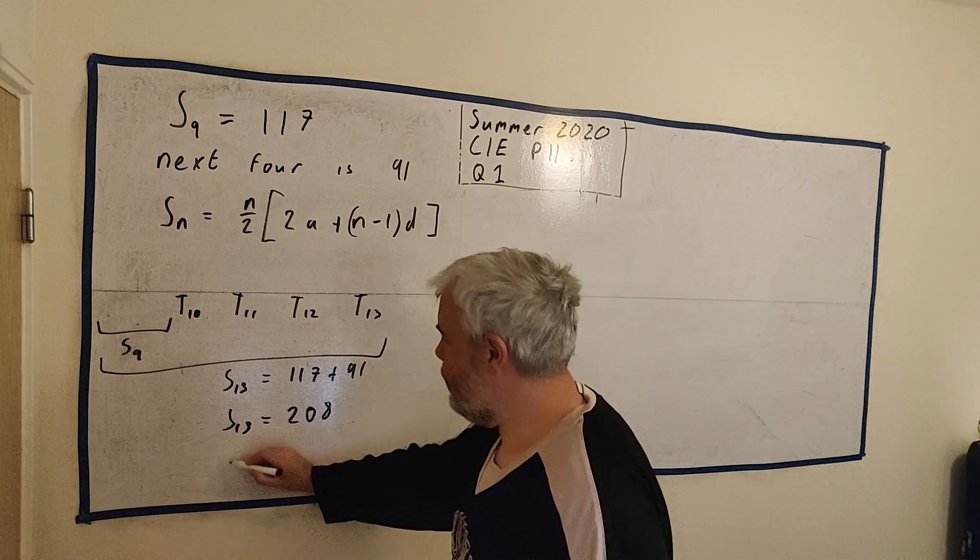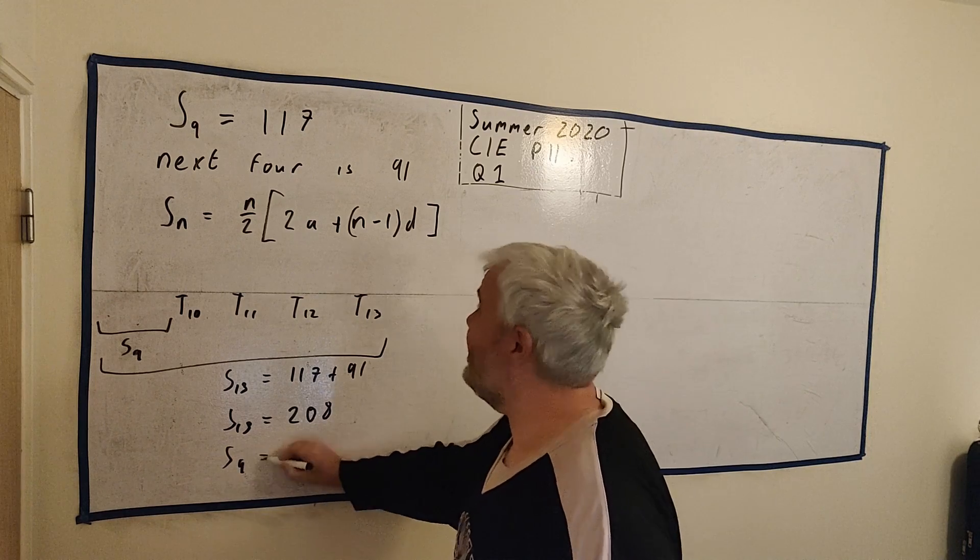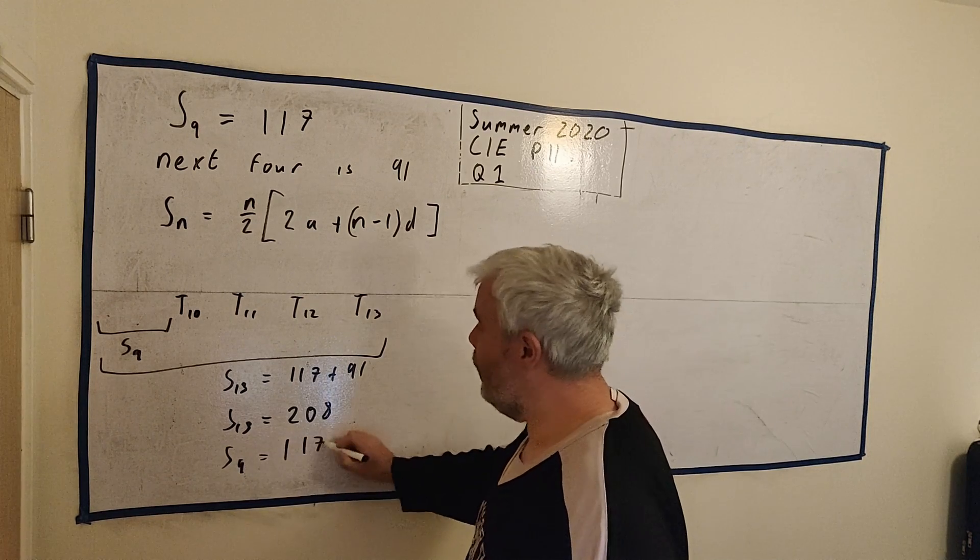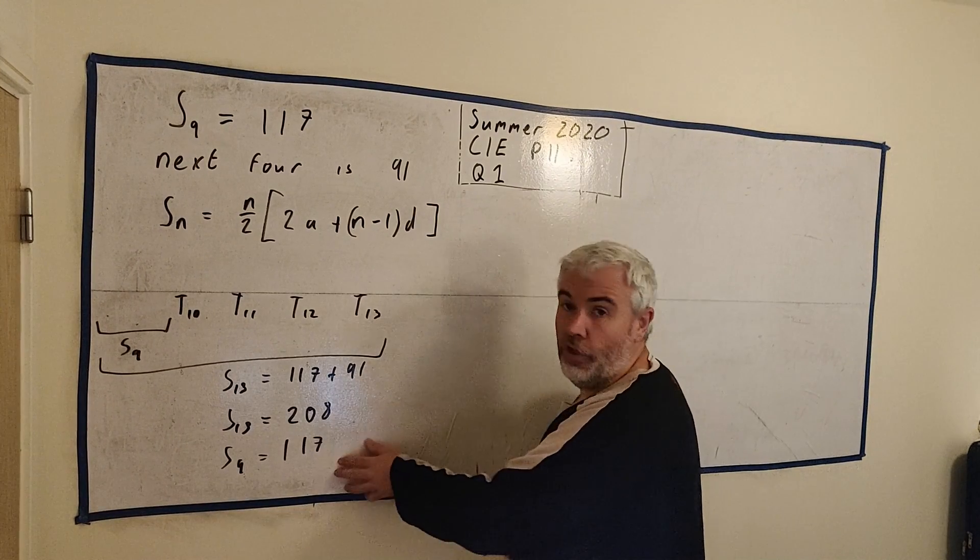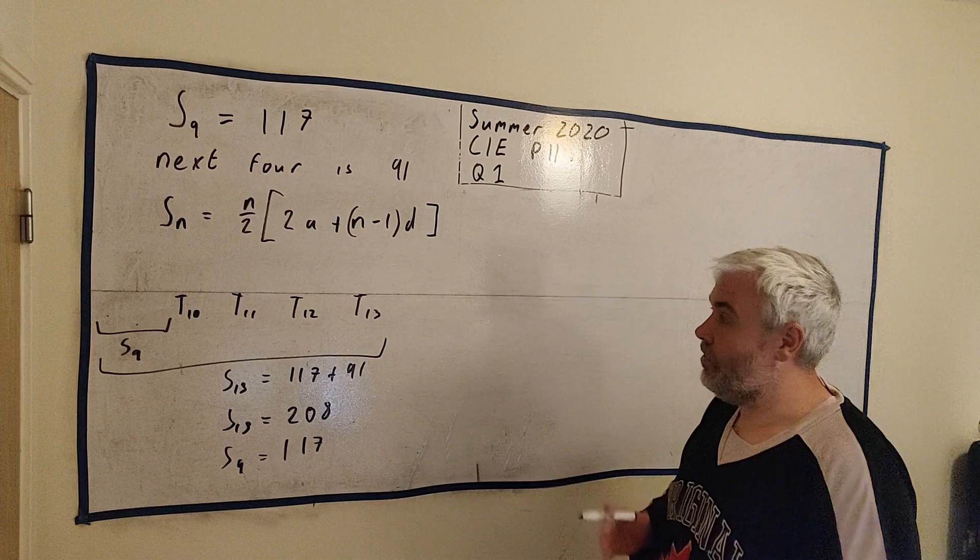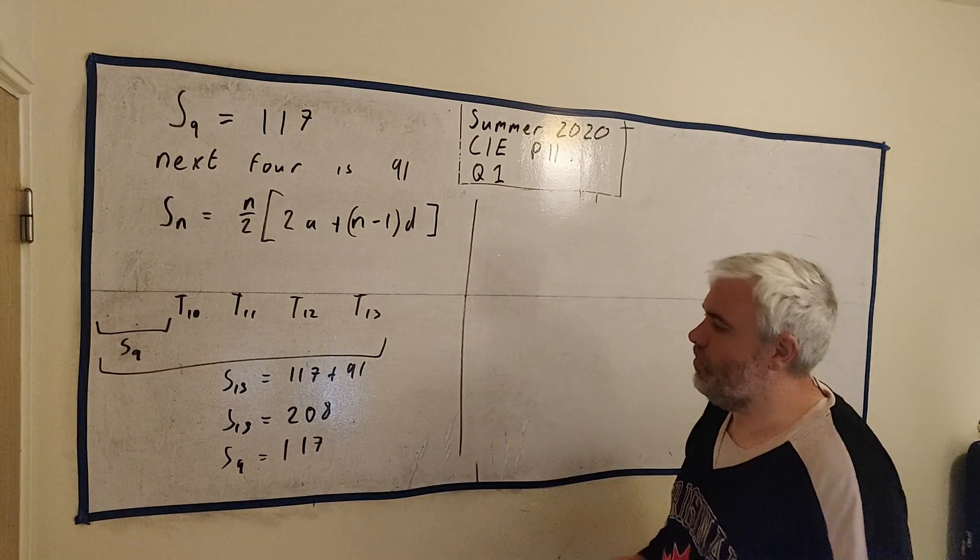And S₁₃ must then equal S₉ plus these four. So S₁₃ must equal 117 plus 91. So S₁₃ must equal 208. So what we have is S₁₃ and S₉. And this is more of a common question that you will see a lot in your examples. When they've given you two terms or two sums, we can use this information to solve it.